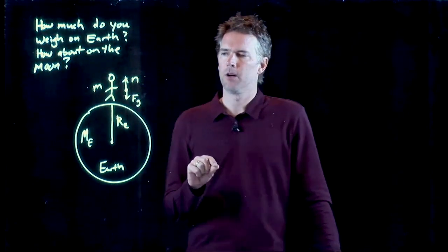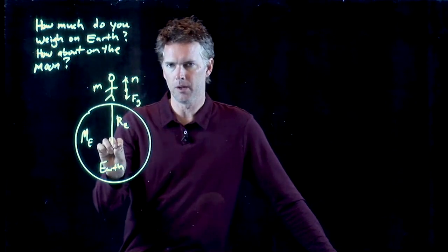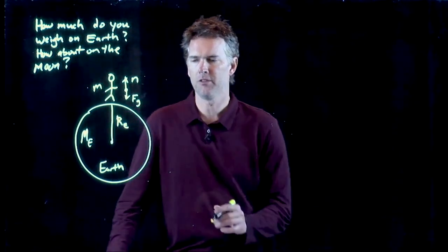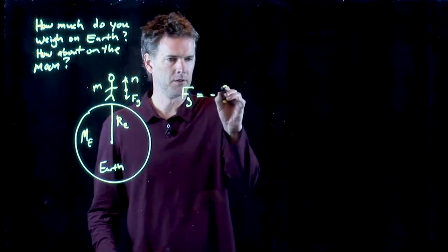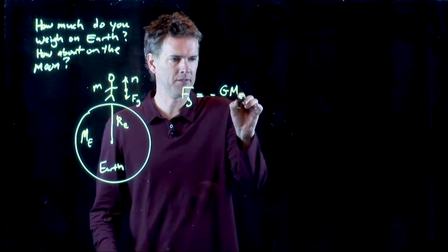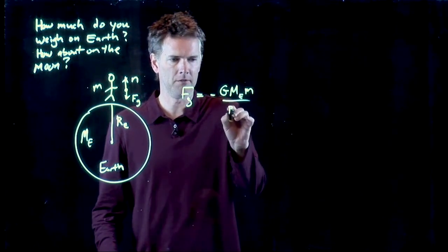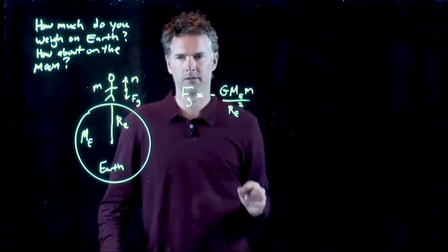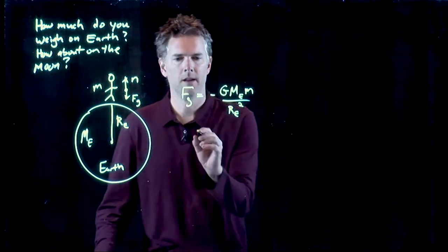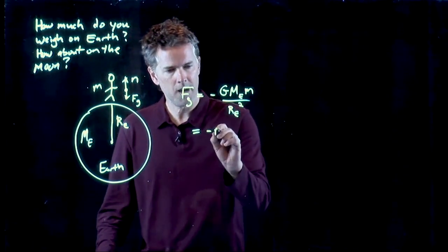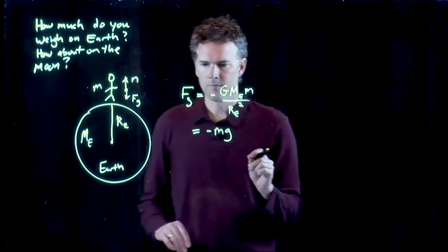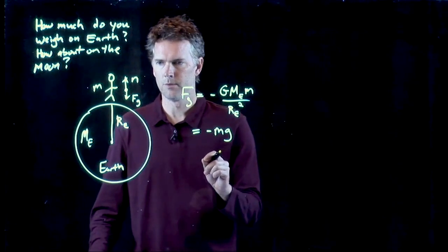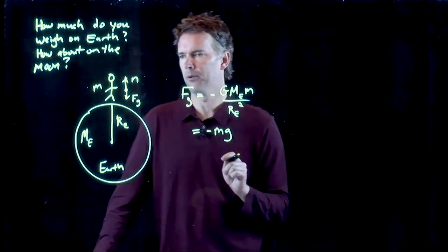What we just saw was gravity due to the Earth pulling us down has a force F sub g, which is negative g mass of the Earth, mass of us divided by the radius of the Earth squared. We plugged in those numbers, and what we saw was that is negative m times little g. Little g is 9.8 meters per second squared.